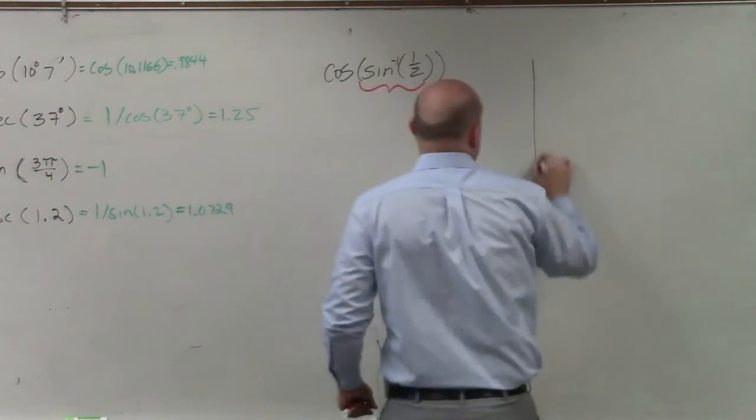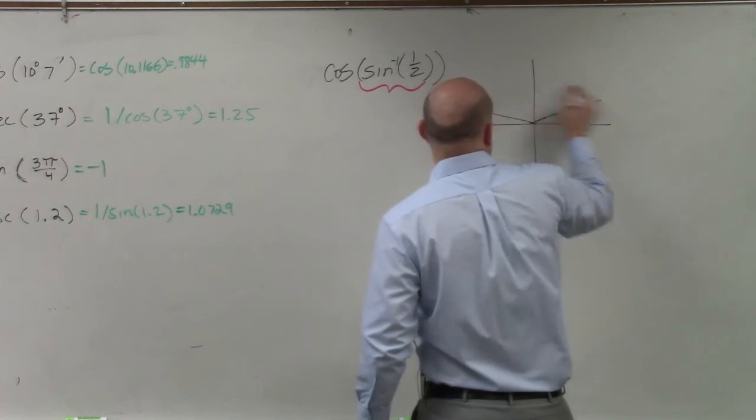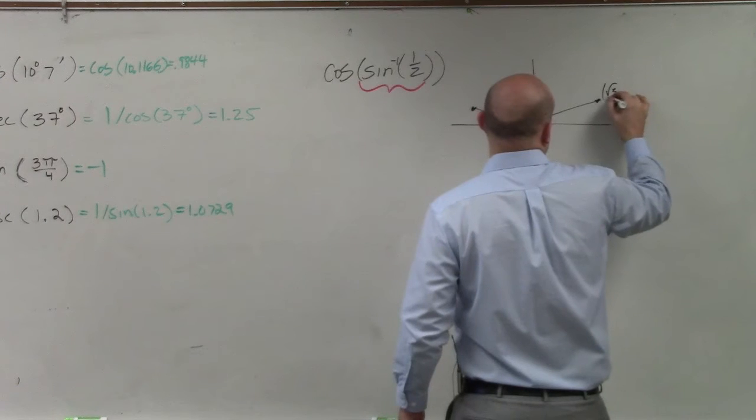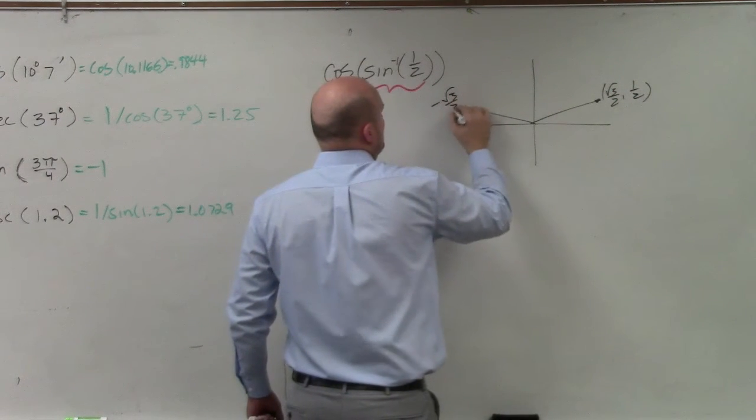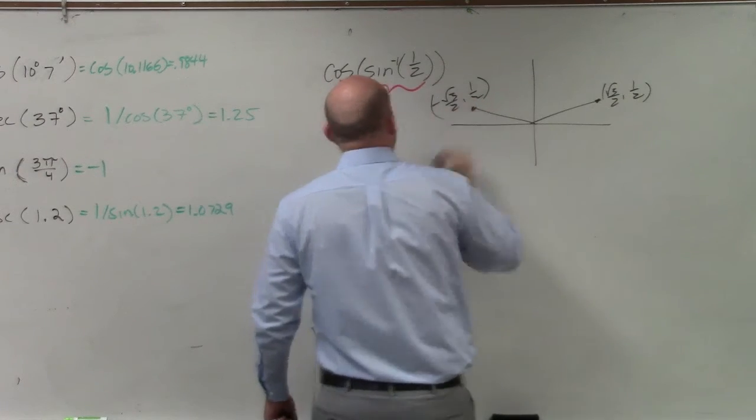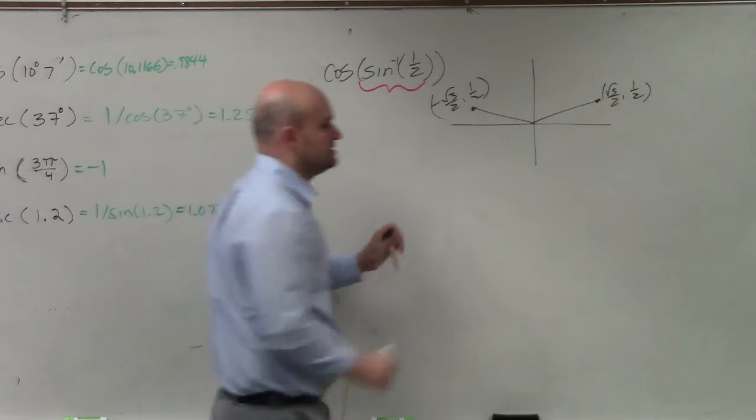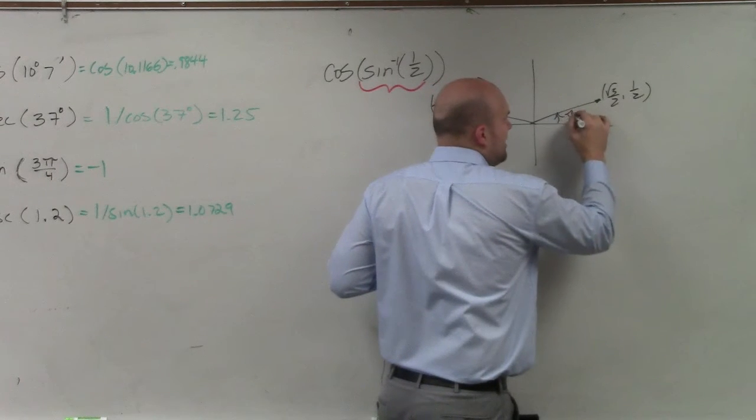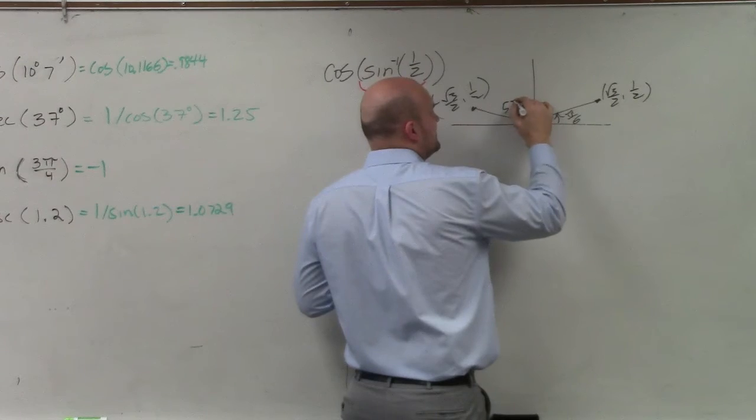So when does the sine of an angle equal 1 half? Well, by my knowledge of the unit circle, I know this point. I know those two points exist. I know the y-coordinate is 1 half at those two points. And I know this angle is pi over 6, and this angle is 5 pi over 6.